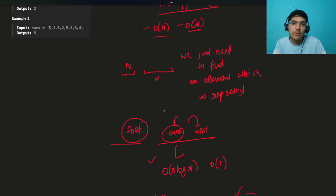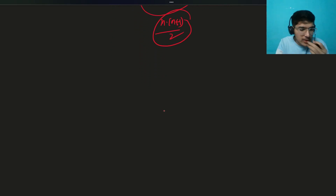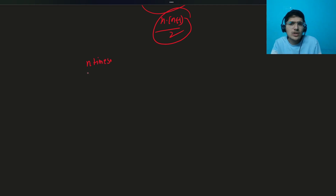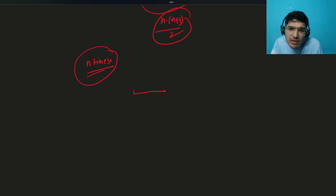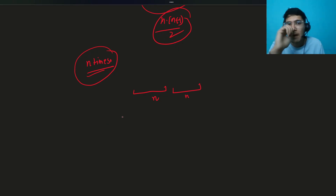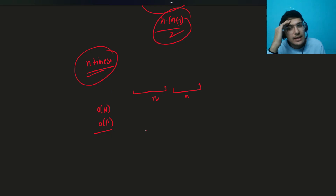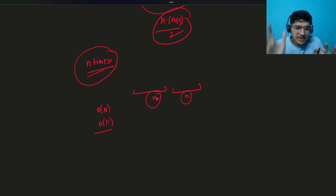Now let's think about something beautiful. It is a duplicate-finding problem, but there is more to it — the element repeats n times. Can we use that? There are 2n elements total, and n of them are the repeated element, with n unique ones remaining. The question is: can we do this in O(n) time and O(1) space, without using a map?